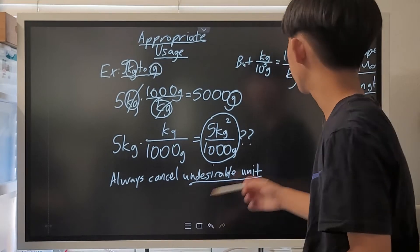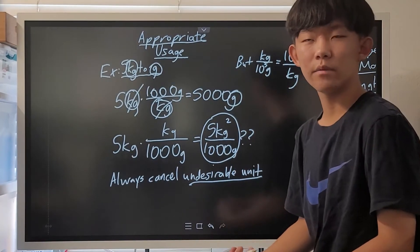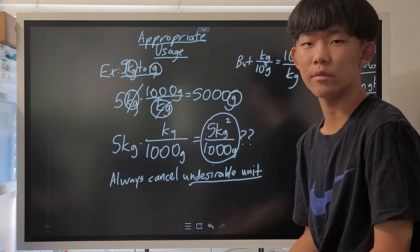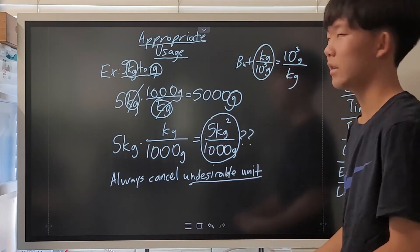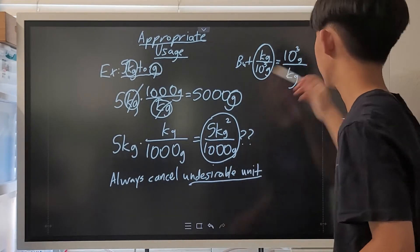But here's the thing though, you can actually convert from grams to kilograms using the same conversion factor since kilograms per thousand grams is equal to 1000 grams per kilogram.